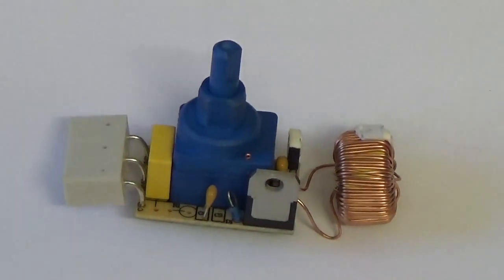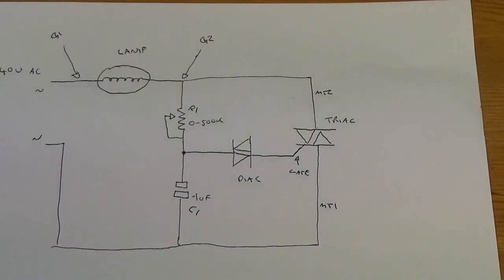So here's a simplified version of the dimmer circuit we just looked at a moment ago. I've omitted the inductor and fuses and things that don't really have an effect on the circuit as an operational thing. So obviously we've got the lamp there.